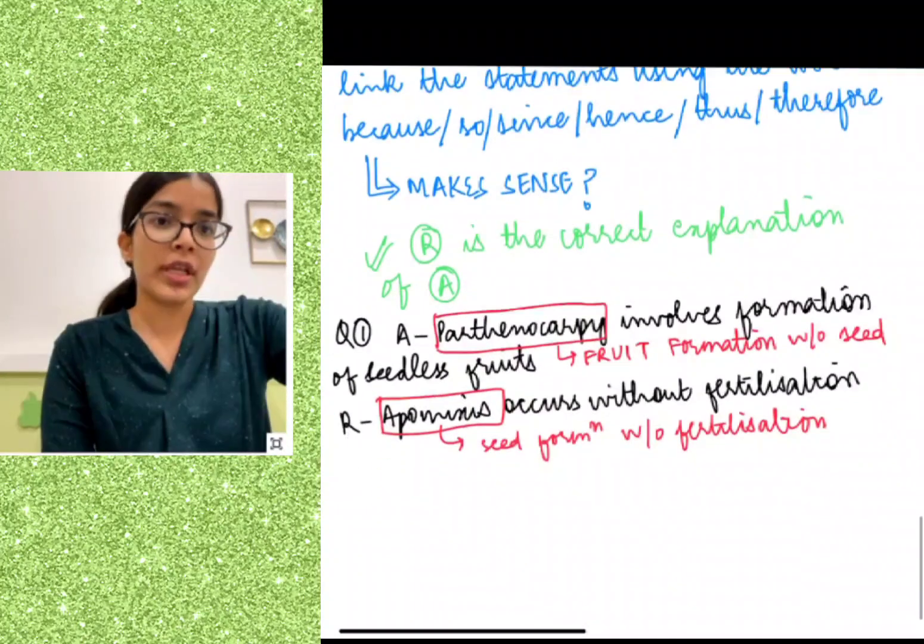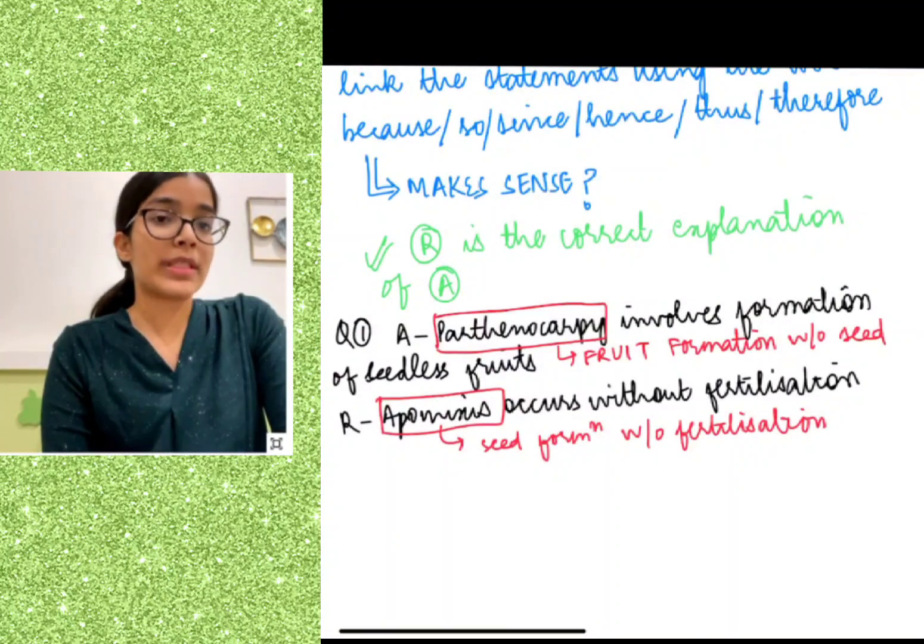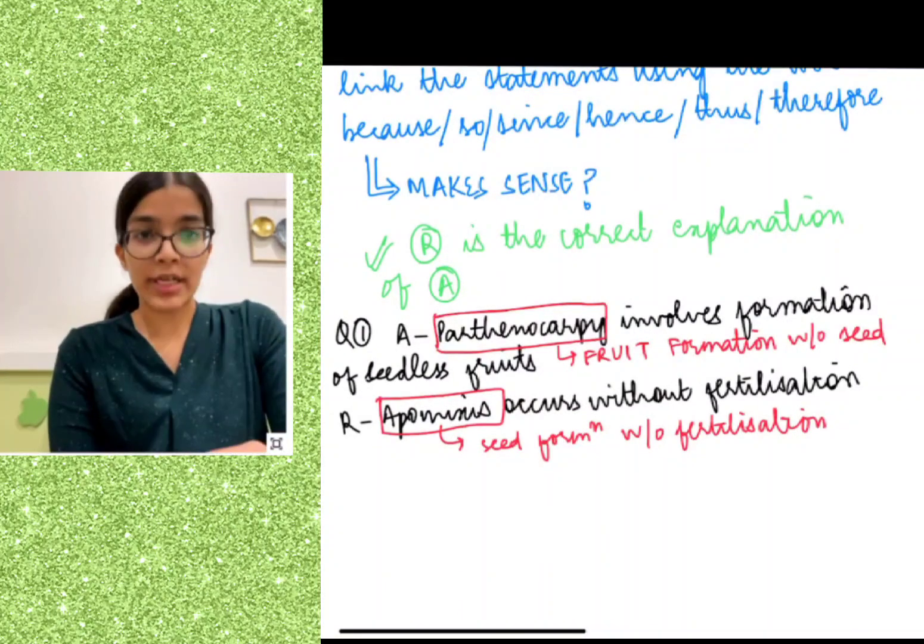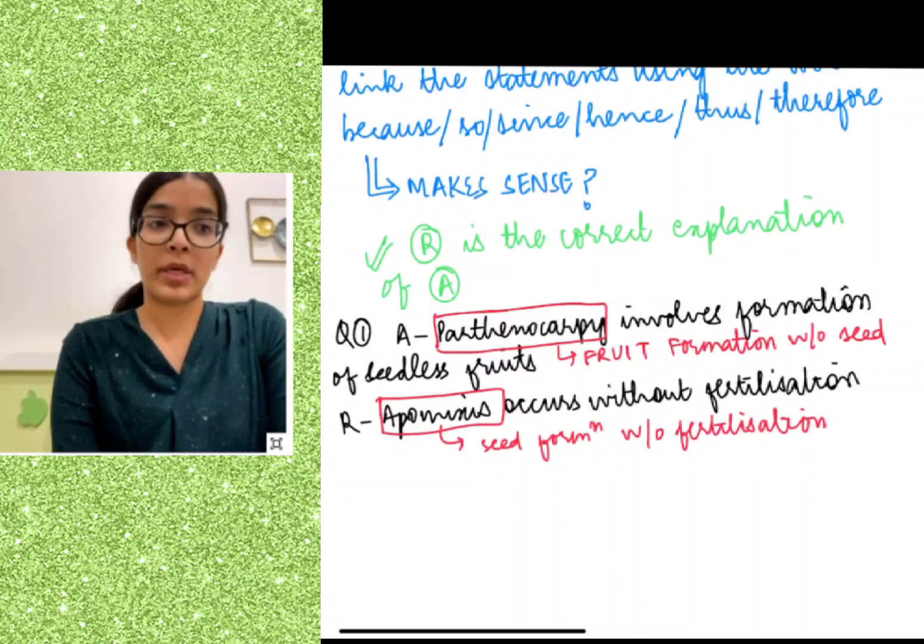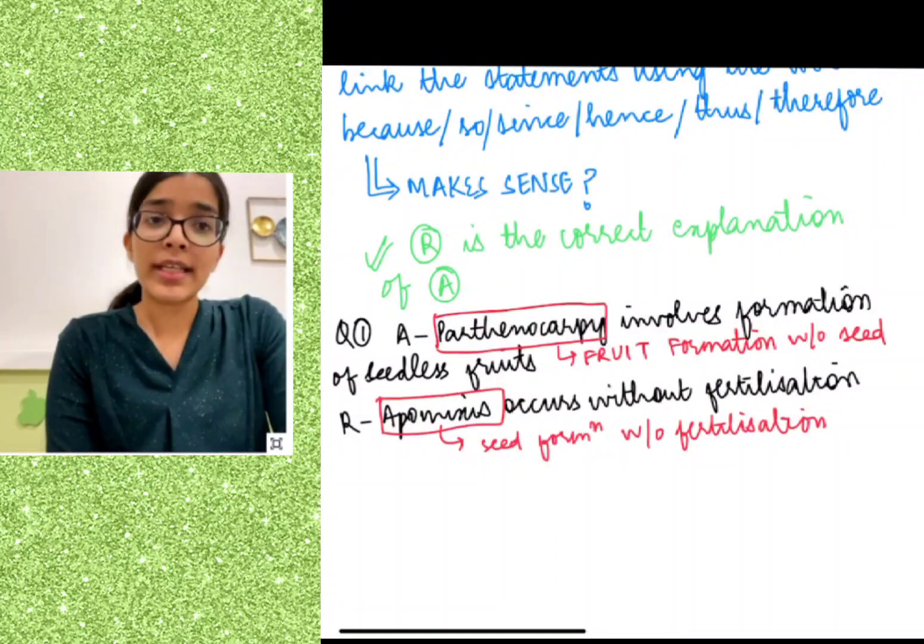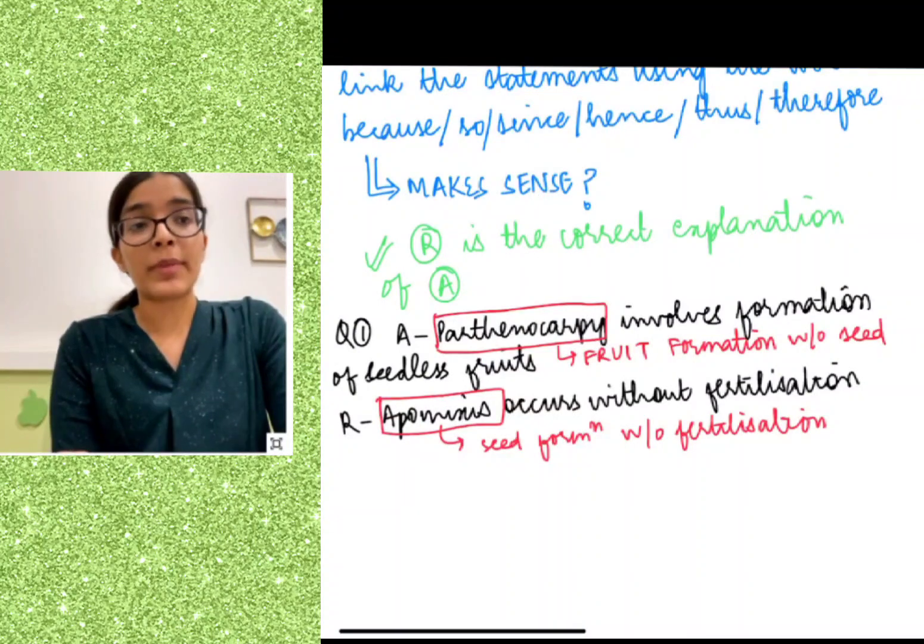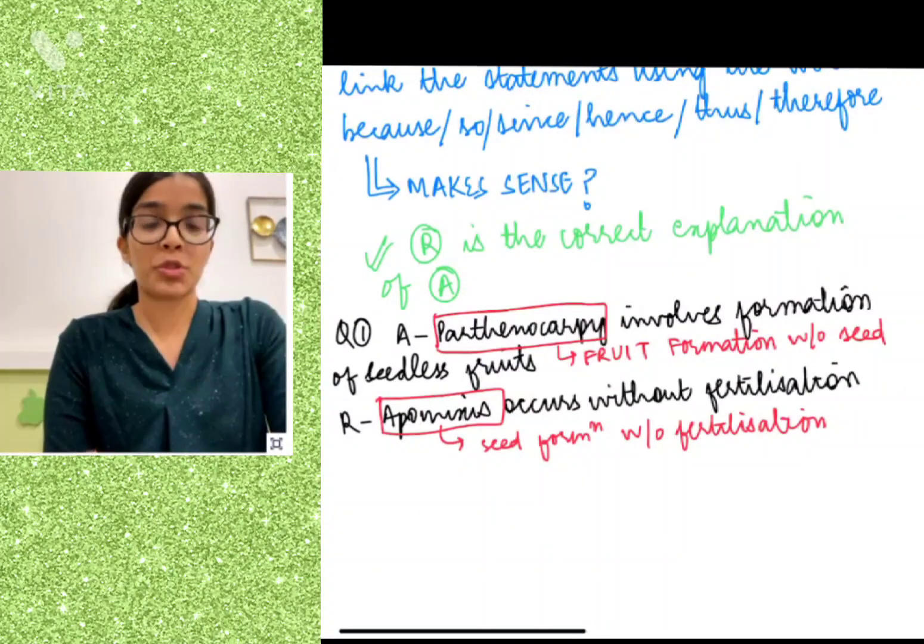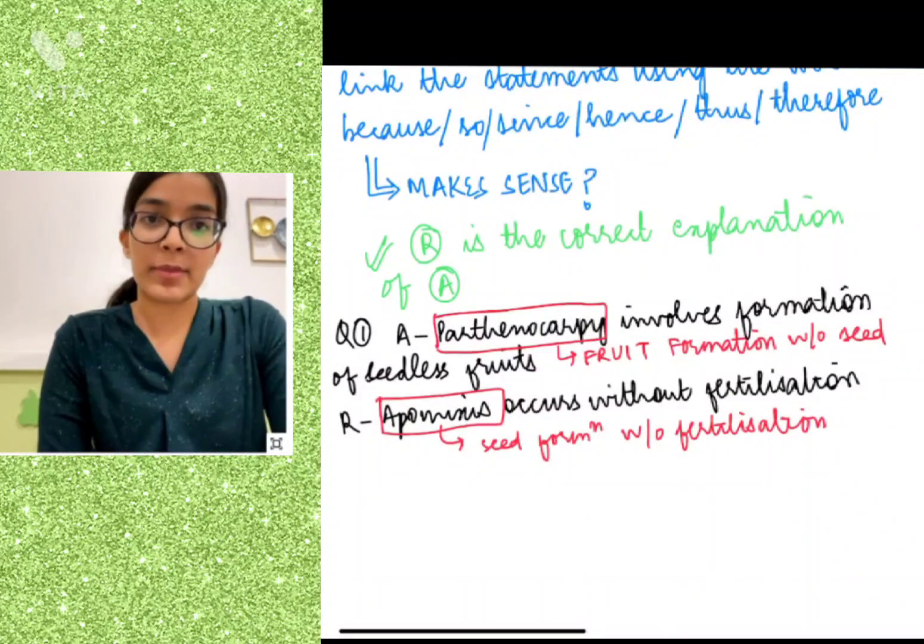We'll try out one simple question. The assertion is that parthenocarpy involves formation of seedless fruits, and the reason is apomixis occurs without fertilization. Now I'll try to link the two statements using the word 'because': Parthenocarpy involves formation of seedless fruits because apomixis occurs without fertilization. Very clearly there seems to be no relation between the assertion and the reason. While parthenocarpy is fruit formation without seed, apomixis is seed formation without fertilization. So the two statements are individually correct, but the reason is not the correct explanation.